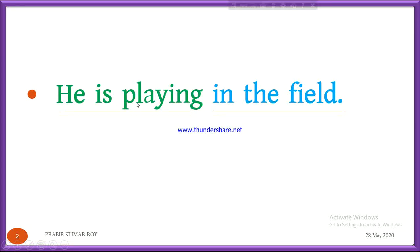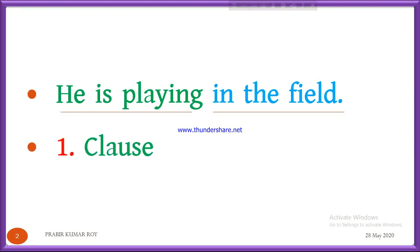In the first part, we can see that we have a subject — 'He' — and we have a verb. But in the second part, there is no subject and no verb. So, can you tell me what these two parts are called? The first part is called Clause, and the second part is called Phrase.